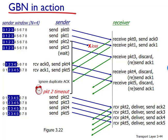On the receiver side, packet 2 is lost, and thus packets 3, 4, and 5 are found to be out of order and discarded. Here is our window, 0 through 8. It sent packets 0, 1, 2, and 3, so these four have been sent. Now it's waiting. It received acknowledgment 0 and sent packet 4. The sender received acknowledgment for packet 1 and responds with packet 5. However, packet 2 was lost.